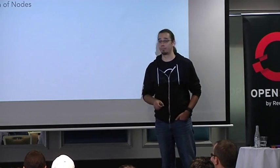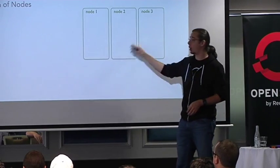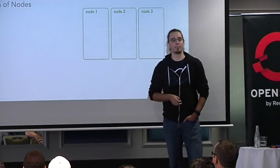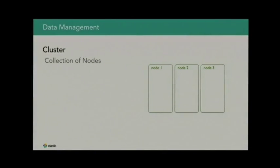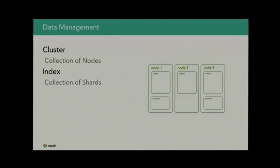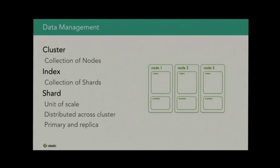How do we organize data inside Elasticsearch? It's distributed, so at the top we have a cluster — a collection of Elasticsearch nodes. We have three nodes, most likely on three different machines. When started, they find each other and form one cluster to work together. Then we have indices — the structure where documents live. An index is internally split into shards, which are the units of scale for Elasticsearch. We have primary and replica shards distributed across the cluster. You can think of an index as just a collection of shards with metadata.